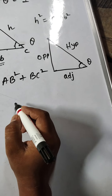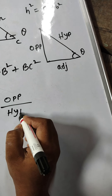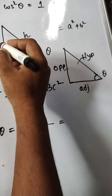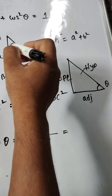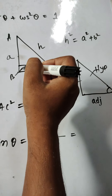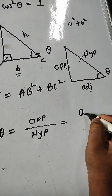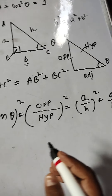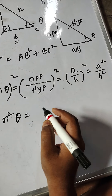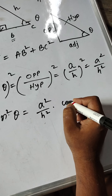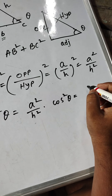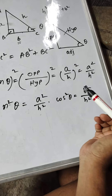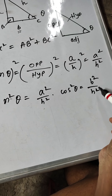We know that sin theta is equal to opposite upon hypotenuse — it is nothing but the ratio of this side (height) and this side (hypotenuse). So in that scenario, sin theta equals A by H, and if you square it, sin square theta equals A square by H square. In the same way, cos square theta is adjacent by hypotenuse, so cos square theta equals B square by H square.